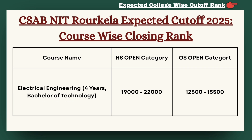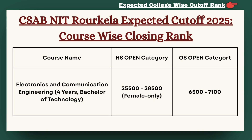Next we have Electrical Engineering. The cutoff is expected to be less than 22,000 for HS category, and for OS category the cutoff is expected to be less than 15,500.